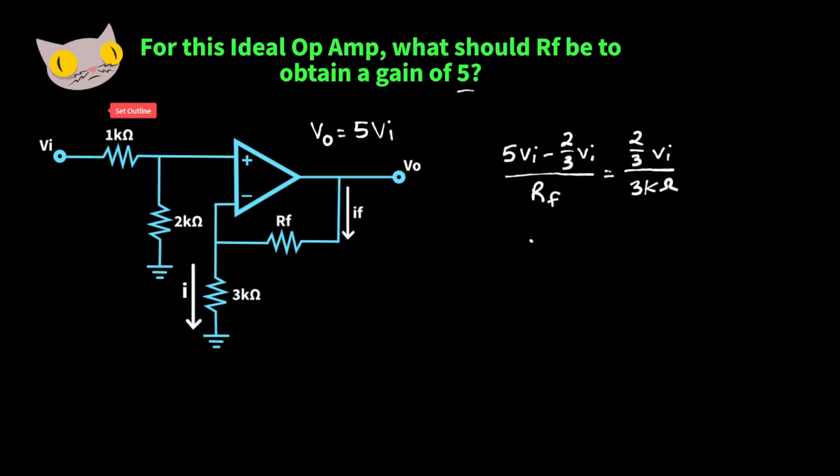So we're left with that. Let's simplify further by getting rid of all these VIs. 5 minus two-thirds, that's going to give us about 13 over 3. And solving for RF, we're going to get about 19.5k ohms.